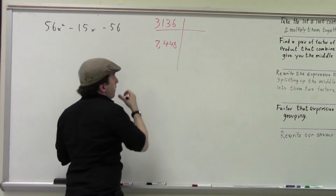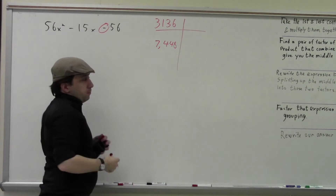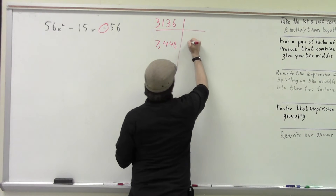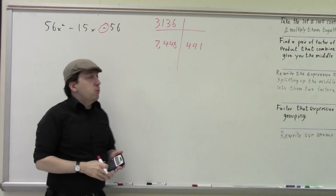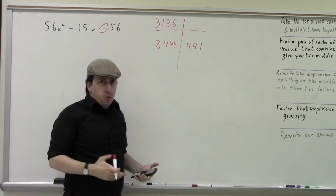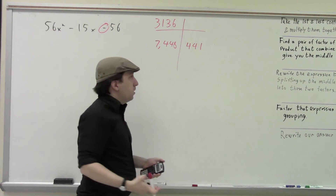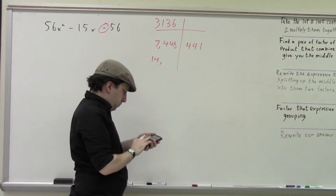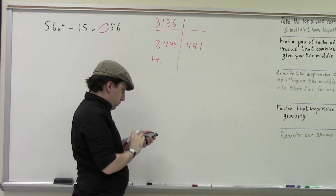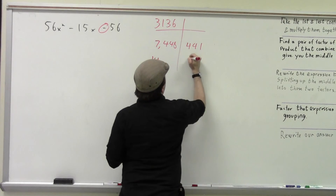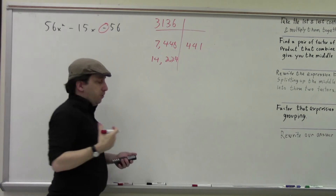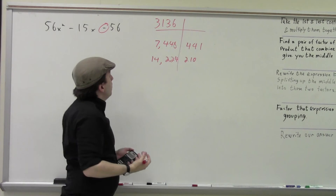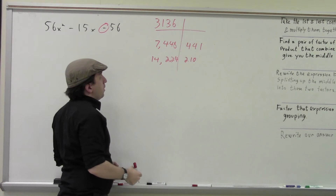I'm looking at the difference because that side is minus, so you always want to pay attention to that. The difference is 441, which is way too big — we want it to be negative 15. So I'm going to go even bigger and try 14, because I know it's divisible by 7 and by 2.